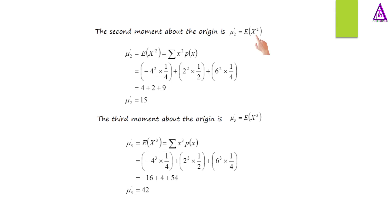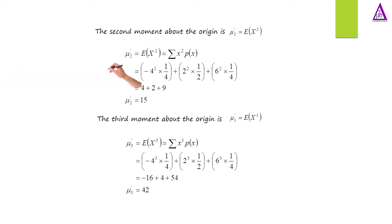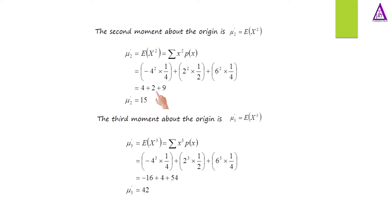The second moment about the origin is the expected value of x squared, equal to the summation of x squared times p(x). This equals negative 4 squared times 1/4, plus 2 squared times 1/2, plus 6 squared times 1/4, which gives us 4 plus 2 plus 9. Therefore, the second moment about the origin equals 15.